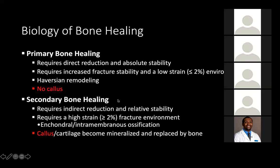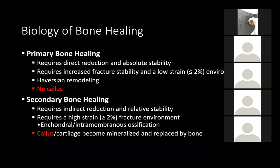Normal bone healing pathology. The biology of bone healing: we have primary and secondary. Primary bone healing requires direct reduction, which you'll see with direct healing of fractures that are reduced or re-apposed. It requires increased stability and low strain — less than 2% of mobility in the fracture environment around the fracture portions themselves.